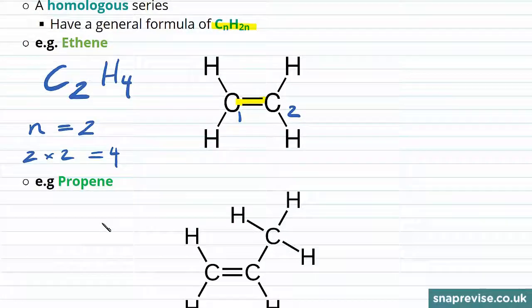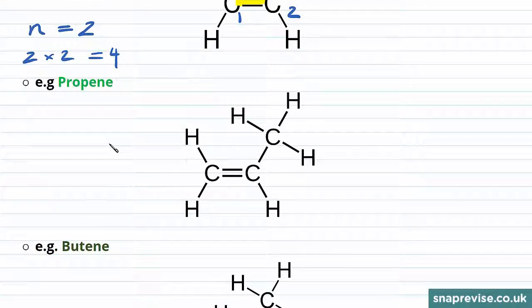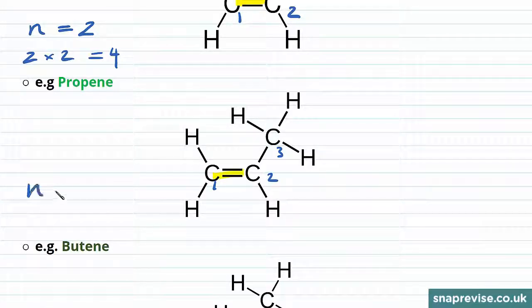If we move on to have a look at a molecule of propene, we can see propene has one, two, three carbon atoms and we can observe that double carbon to carbon bond over here. So n will be equal to three and we can predict that there will be three times two, that is six hydrogen atoms. So the formula will be C3H6.